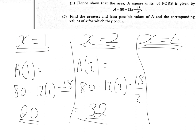I'm now going to investigate A of 4, so that's 80 minus 12, lots of 4, minus 48 over 4, and that'll give me 80 minus 48, minus 12, which is 20 again.